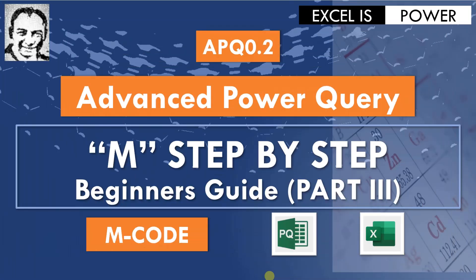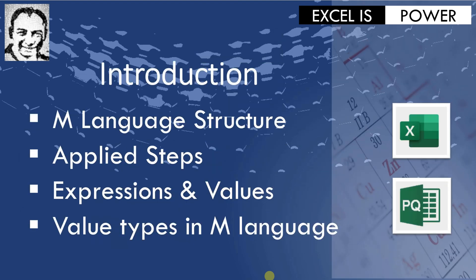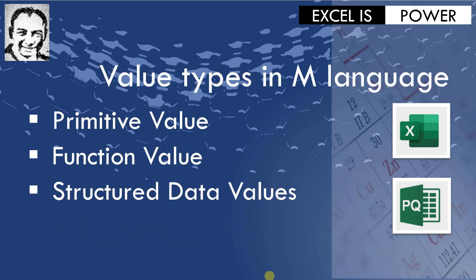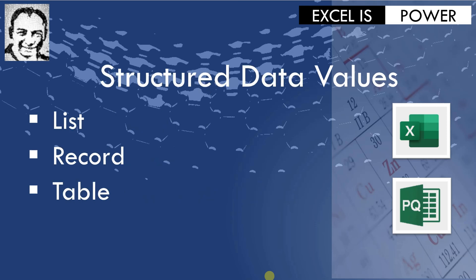Hello and welcome to a new video from the Advanced Power Query series, video APQ 0.2. This is Part 3 of the M Language Step-by-Step, or the Beginner's Guide for M Language. In the previous two videos, we discussed the following topics: an introduction about the M Language structure, the applied steps, expressions and values, value types in M Language, and we did a deep dive into the value types. We discussed the primitive value, function value, and structured data values — lists, records, and tables.